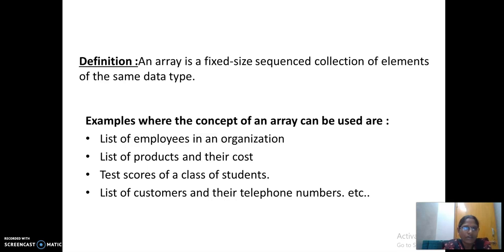Example, where you are using the arrays is list of employees in the organization. Instead of writing the name of an employee in an organization with 100 employees, instead of declaring 100 variables, what I am going to do is I am going to write one array called as employee within the square brackets, 100. That means, limitation is 100 employees.